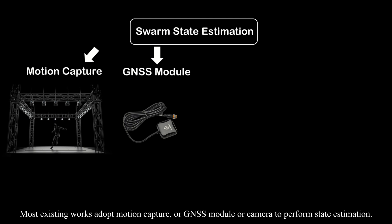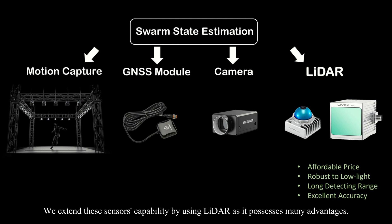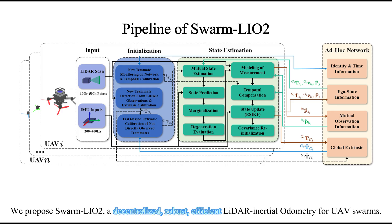Most existing works adopt motion capture, GNSS modules, or cameras to perform state estimation. We extend these sensors' capability by using LiDAR, as it possesses many advantages. We propose Swarm LiO2, a decentralized, robust, efficient LiDAR inertial odometry for UAV swarms.